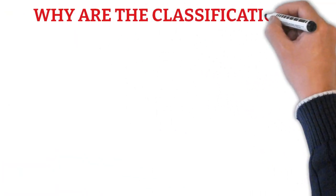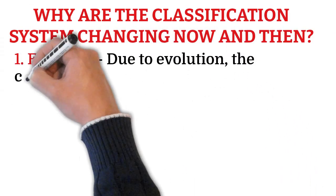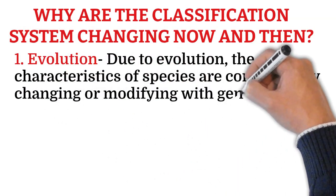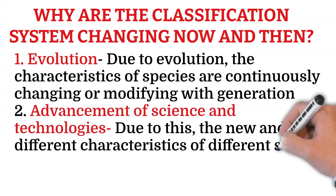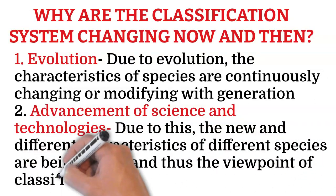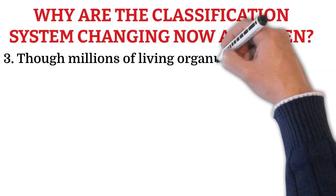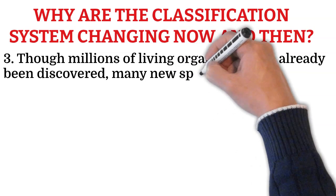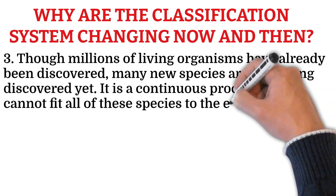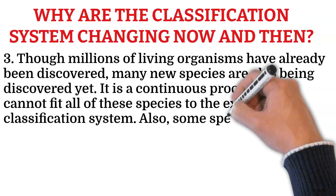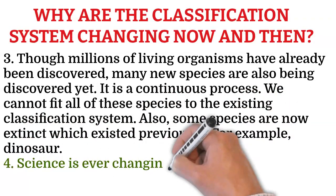Now, why are classification systems changing now and then? The first point is evolution — due to evolution, the characteristics of species are continuously changing or modifying with each generation. Also, due to advancement of science and technology, new and different characteristics of species are being learned, changing the viewpoint of classification. Though millions of organisms have already been discovered, many new species are still being discovered — it is a continuous process. We cannot fit all these species into the existing classification system. Also, some species are now extinct that existed previously, for example dinosaurs. Science is ever-changing, and so is the classification system.